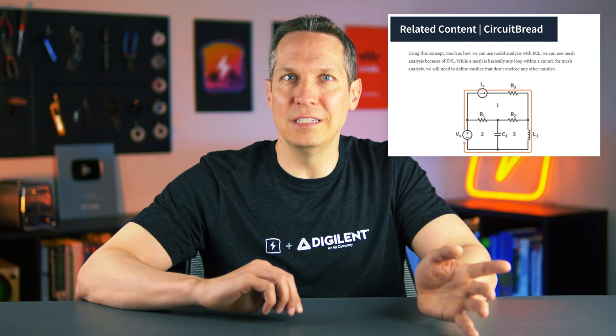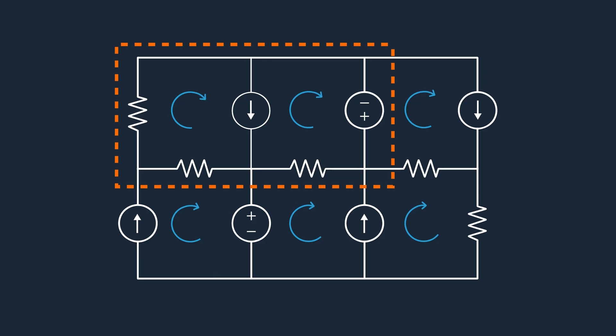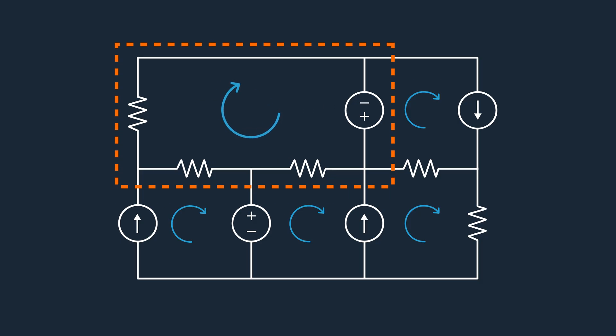Now let's talk about mesh analysis and supermeshes. Even if you know KVL, there are cases where KVL alone isn't sufficient. One such case arises when a current source is shared between two meshes, as the voltage drop across the source is undefined — it depends on the unknown internal resistance. To fix this, we use a supermesh, which is formed when there is a current source between two meshes. Instead of applying KVL separately to each mesh, we exclude the current source and apply KVL to the larger loop surrounding both meshes, while using an additional equation to account for the value of the current source.